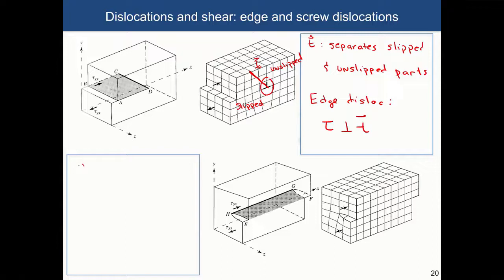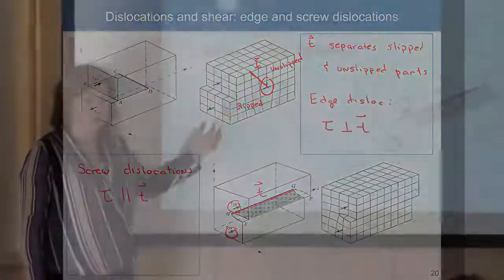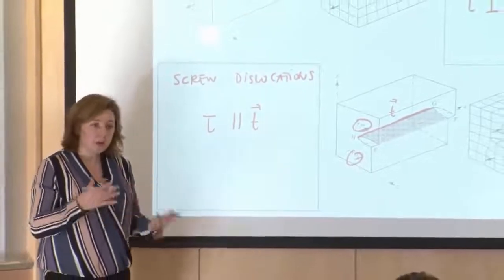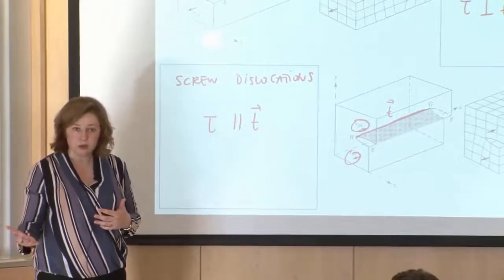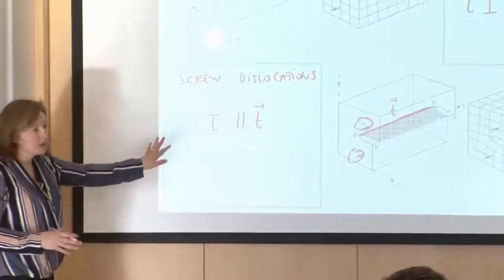For screw dislocations, the shear stress is parallel to T. In this case, the material is deformed such that the dislocation line runs parallel to the applied shear stress. This is the difference in how edge and screw dislocations are formed and their relationship to the applied shear stress. We will also see a very clear difference in how the Burgers vector relates to the tangent vector in these two types of dislocations — they have very distinct descriptors.